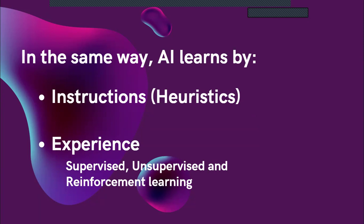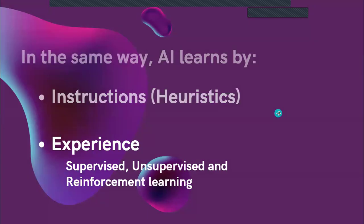Reinforcement learning means having the AI learn from its mistakes by penalizing or rewarding it. If you're using ChatGPT, you'll see they sometimes say they're using your prompts to train the AI — because they want it to have more experience with human text, to see what humans type and say, so it learns from that and mimics it. That's the same way we learn from experience.